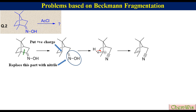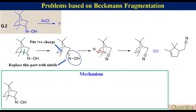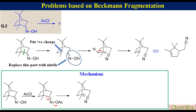We can simply draw this structure like this. Going through the mechanism: camphor oxime reacts with acetyl chloride to produce O-acetyl oxime. Elimination of acetate and breaking this C-C bond gives the cationic nitrile. Beta proton elimination gives the Beckman Fragmentation product, which can be drawn like this.